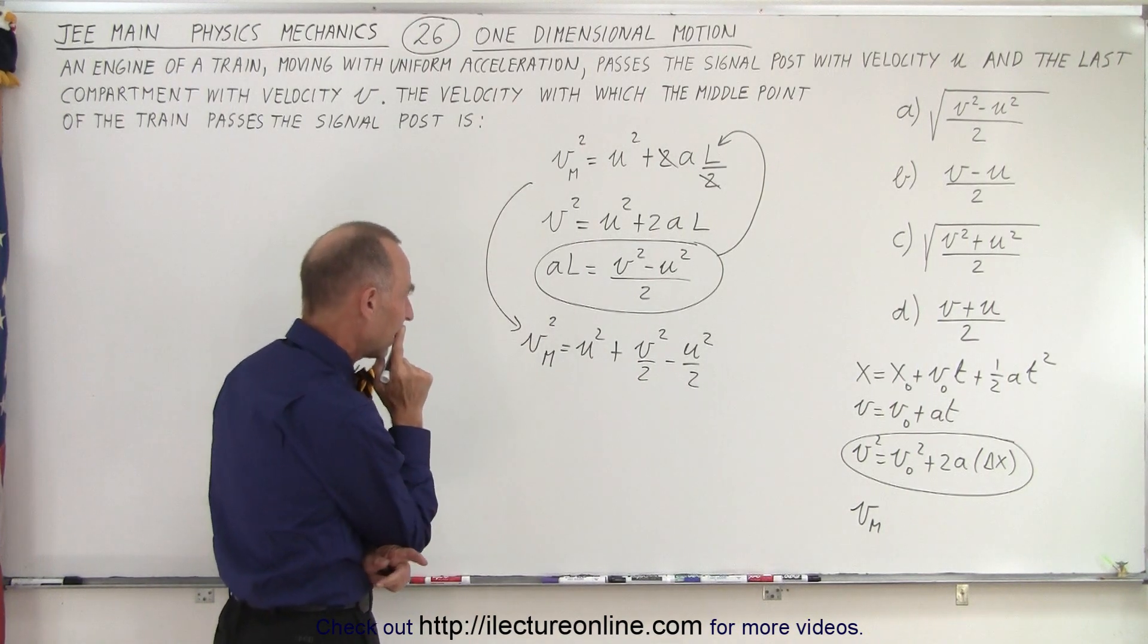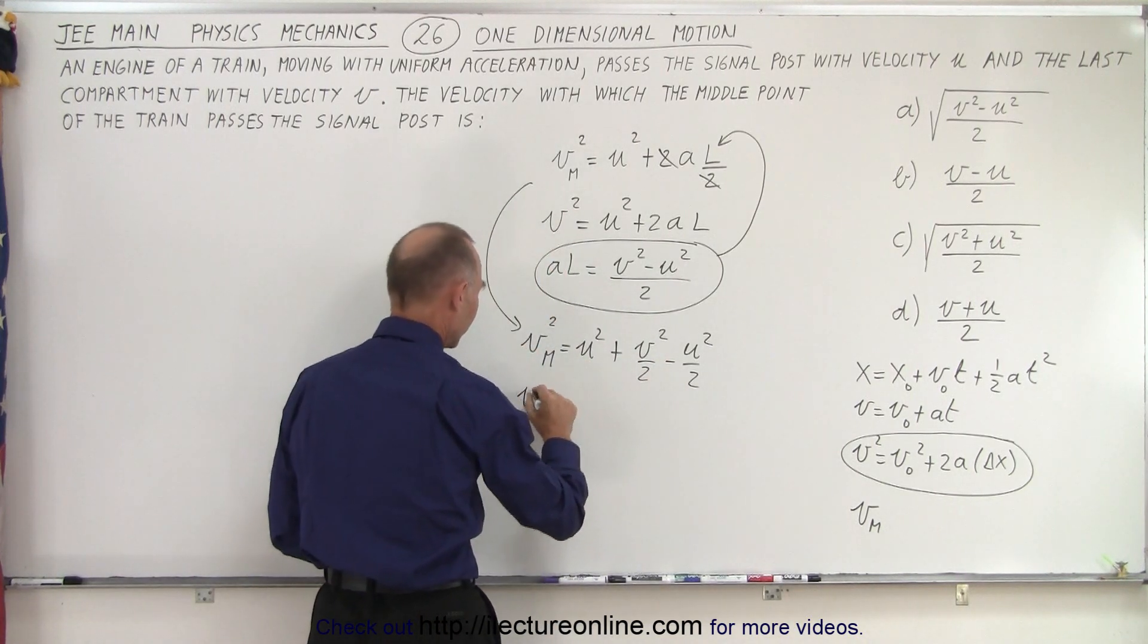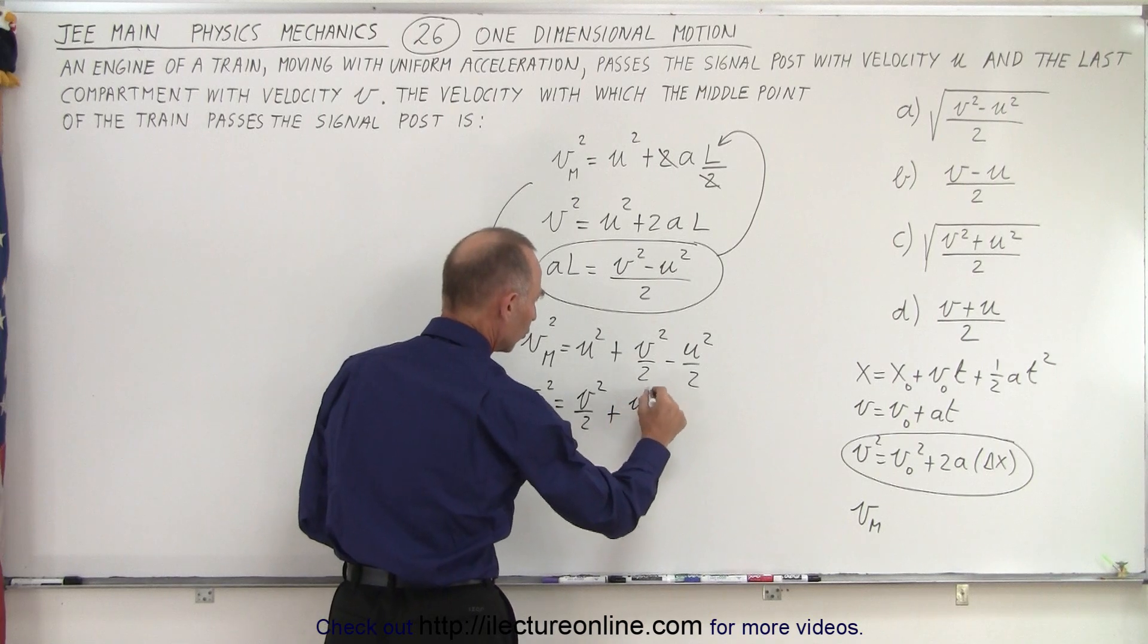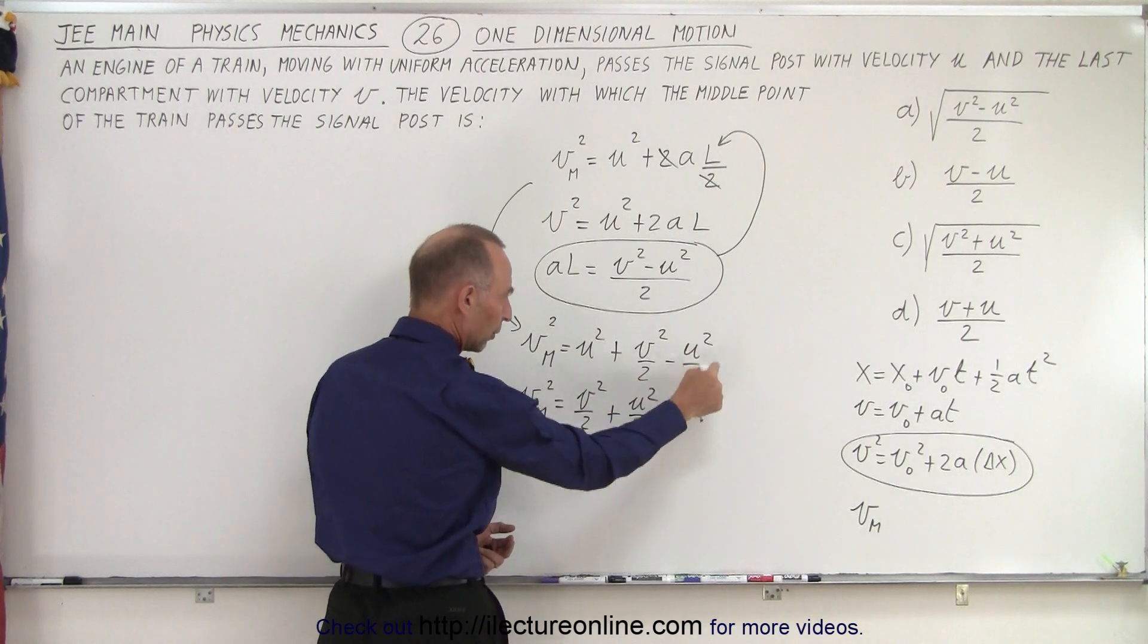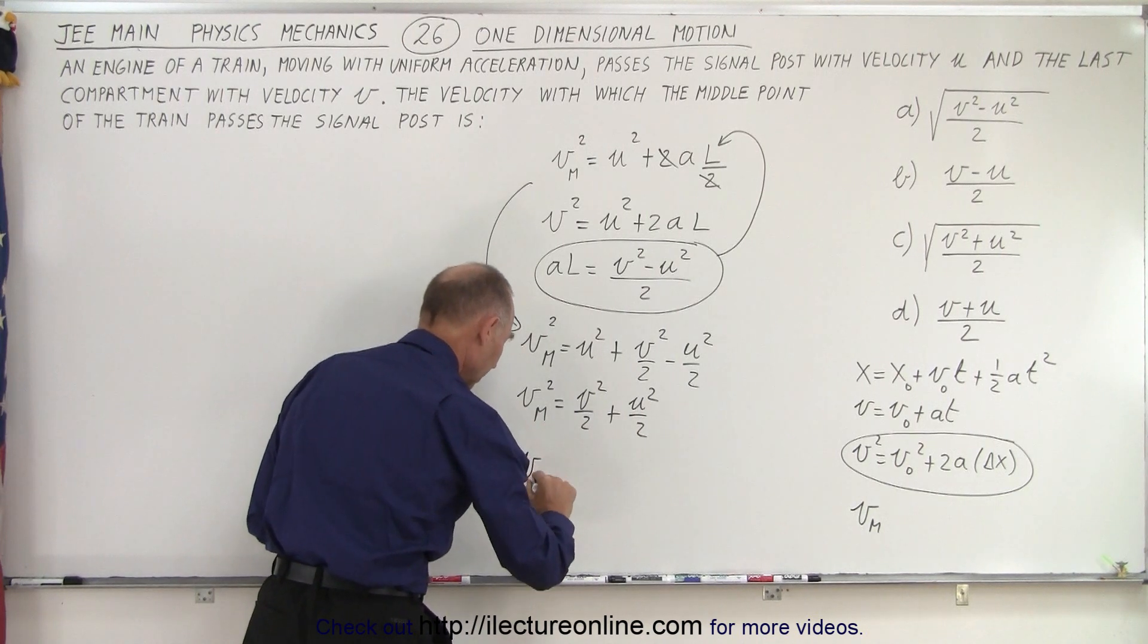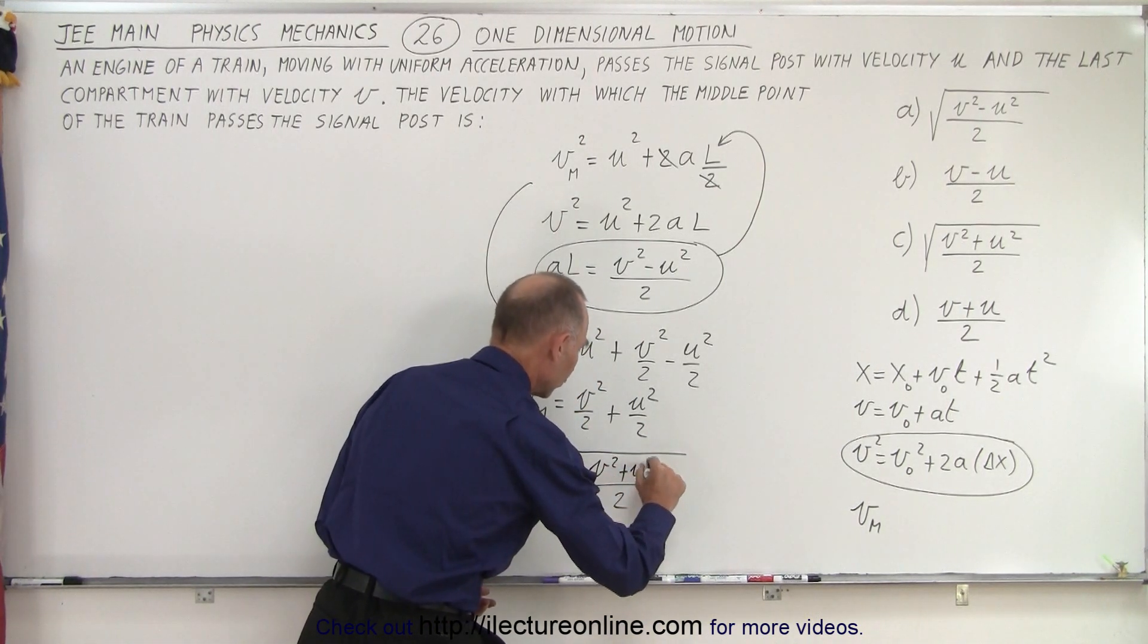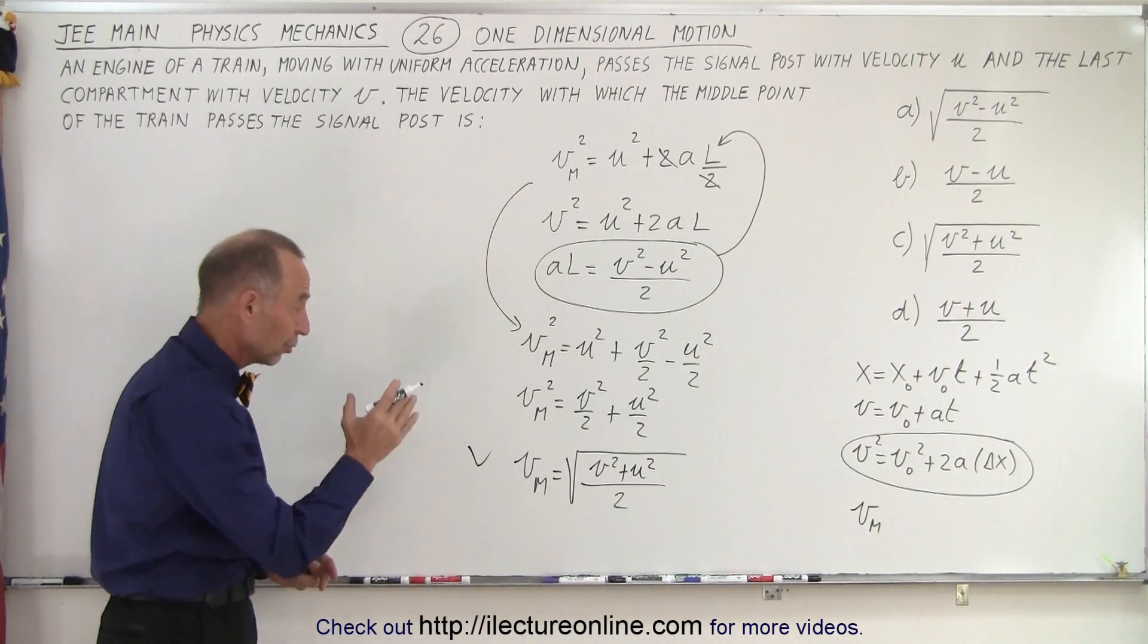So notice I have a u squared and a minus a half u squared. So this becomes v middle of the train squared is equal to, I'm going to pull this one forward, v squared over two plus u squared over two. Because u squared minus u squared over two is simply u squared over two. And then I can take the square root of both sides, so v of the middle of the train is equal to the square root. I can factor out a one-half, so put the two over there and end up with v squared plus u squared in the numerator. And that is the velocity at the middle of the train in terms of v and u.